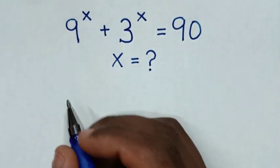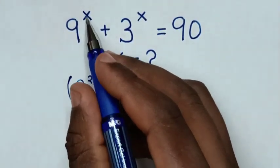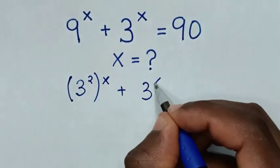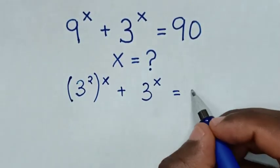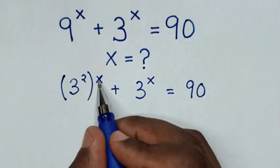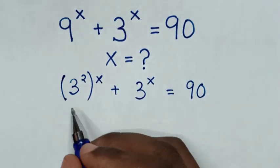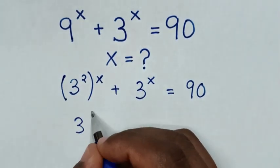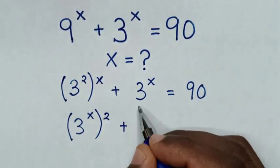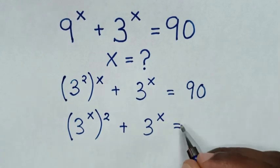First, 9 power x is the same as 3 squared, bracket power x. Then plus 3 power x is equal to 90. In the next step, we exchange the power of x inside the bracket and power of 2 outside the bracket, so it will be 3 power x, bracket power 2, then plus 3 power x is equal to 90.